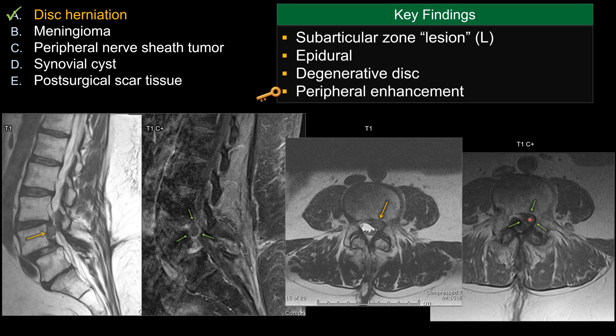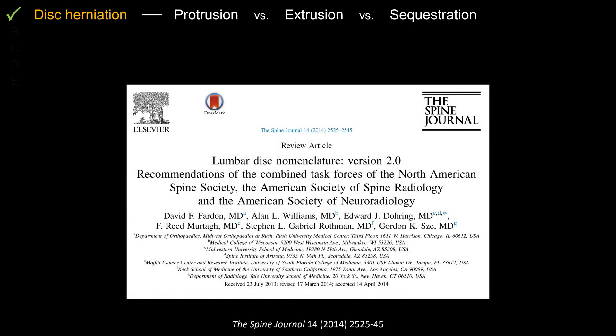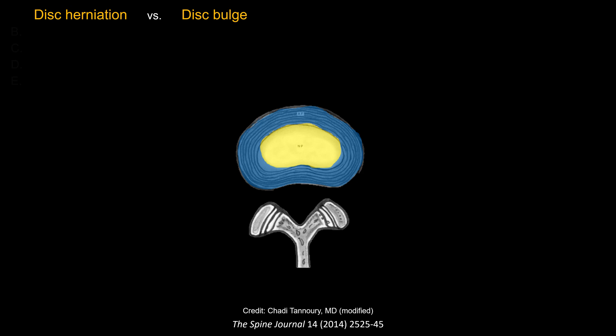Notice that there's very little central enhancement. That distinguishes it from others such as meningioma or schwannoma. For disc herniation, you want to characterize them into disc protrusion versus extrusion versus sequestration. It's a good idea to keep the language consistent. This is a review article with the nomenclature we are using — you can find that in Radiopaedia or other sites such as radiologyassistant.nl.